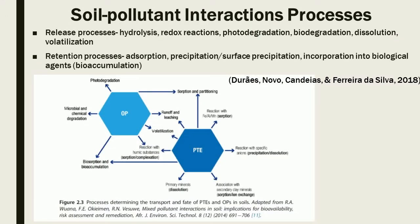The main processes that will determine the route from the source to fate of a pollutant in soil are: 1. those promoting the release of the contaminant from a specific soil matrix, and 2. those occurring between the pollutants and the soil components, where interaction will allow pollutants' migration or retention in soil. The release of a pollutant by transformation of the soil matrices is dependent on hydrolysis, redox reactions, photodegradation, biodegradation, dissolution, and volatilization.